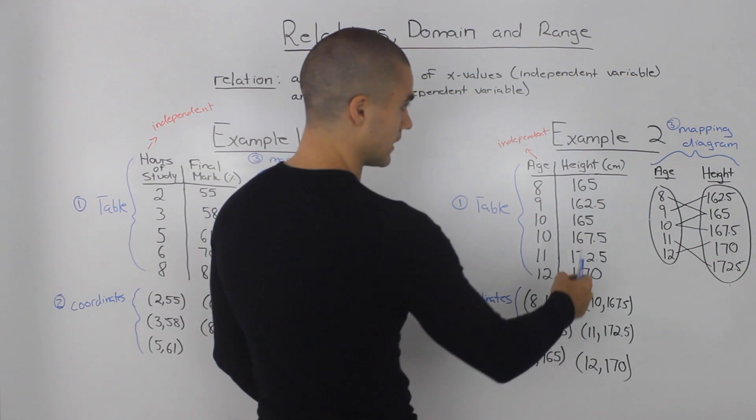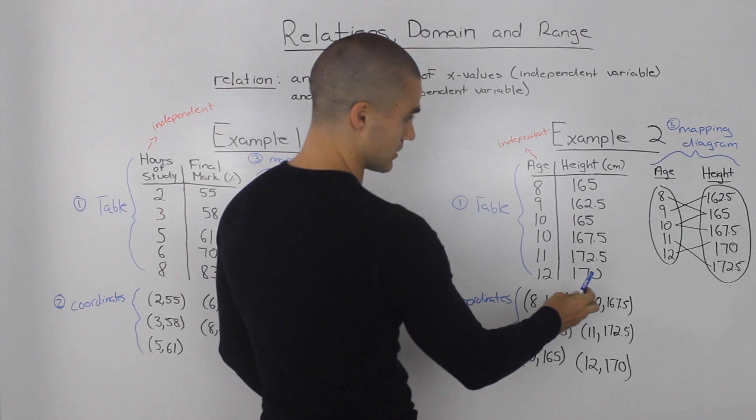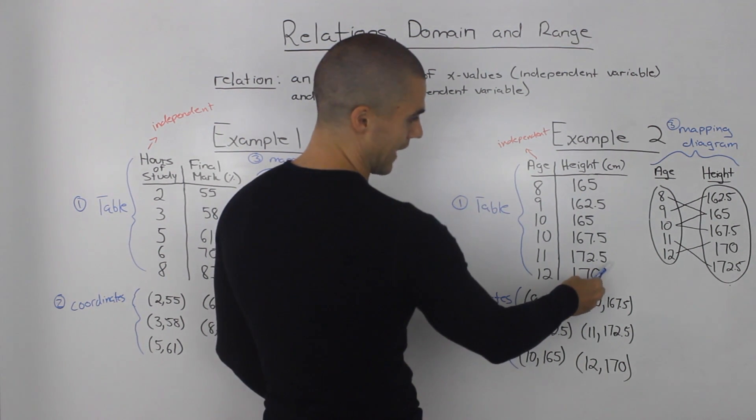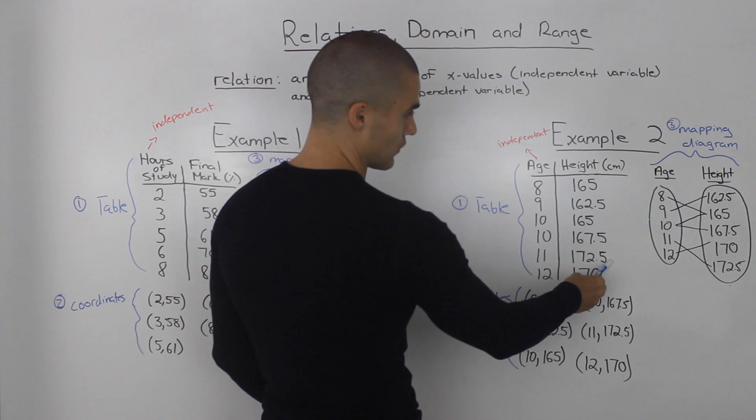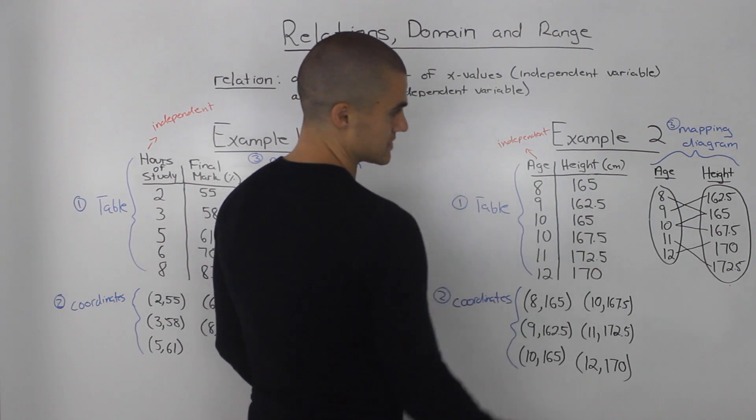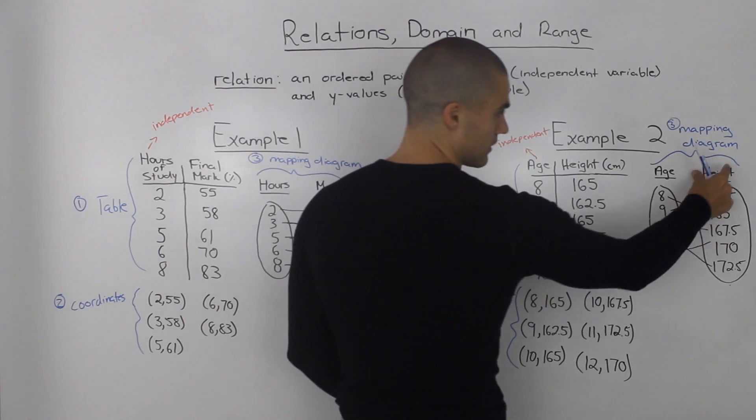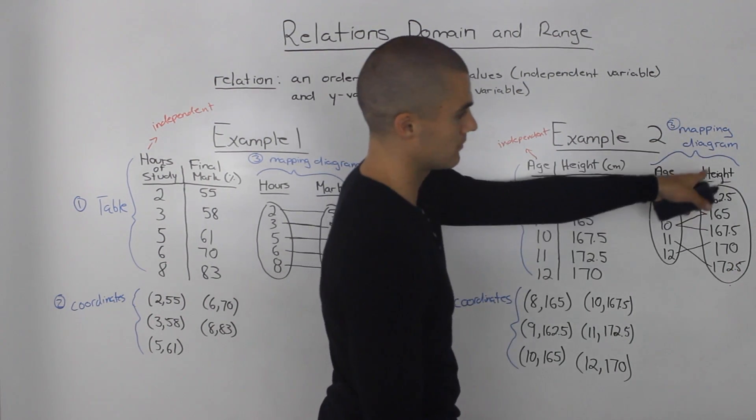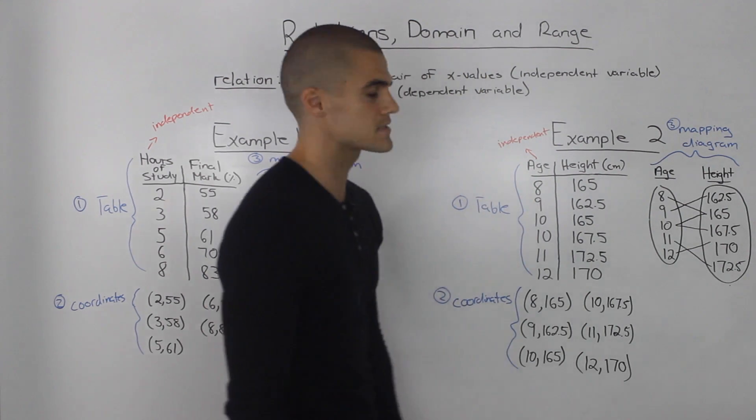Notice how in both mapping diagrams I listed all of the variables in order from lowest value to highest value. That's what I mean by order. For example, in this relation, the 170 came after the 172.5, but when I put them in the mapping diagram, I listed them in order from lowest to highest.